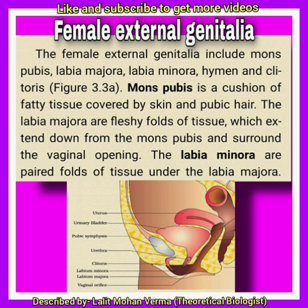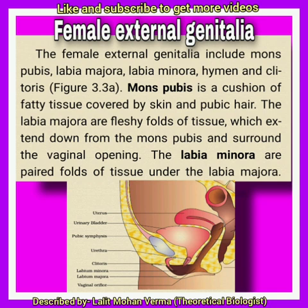Female external genitalia. The vagina is a fibromuscular elastic tube about 7.5 cm long into which the uterus opens. Mons pubis is a cushion of fatty tissue covered by skin and pubic hair. Labia majora are fleshy folds of skin extending from the mons pubis, surrounding the vaginal orifice. It is homologous to the scrotum.